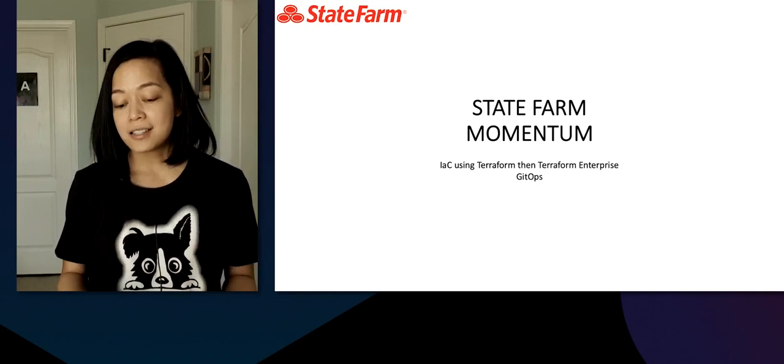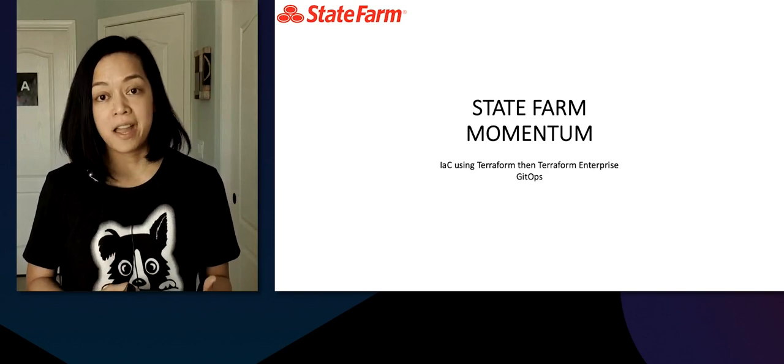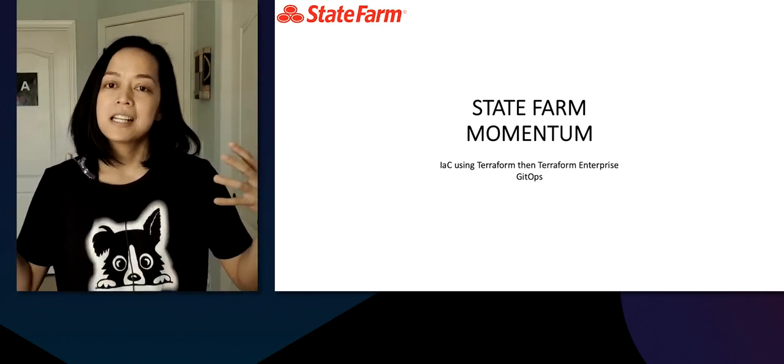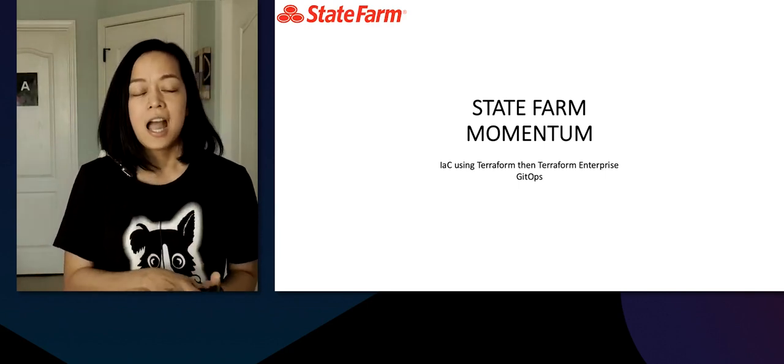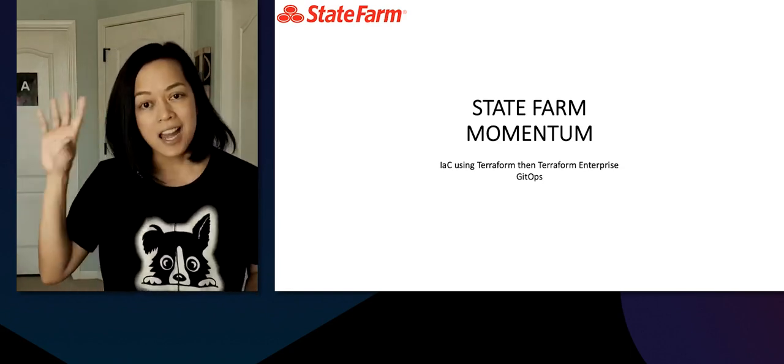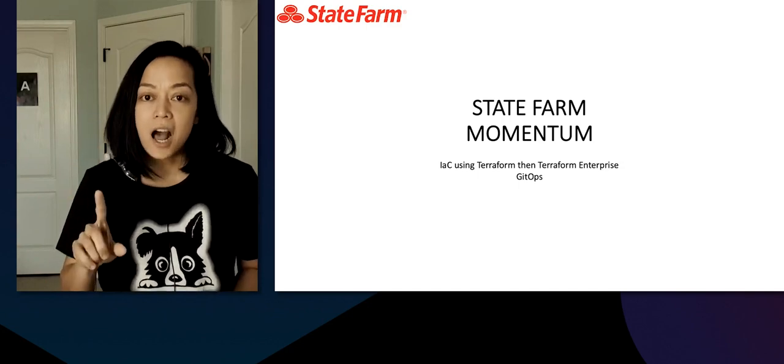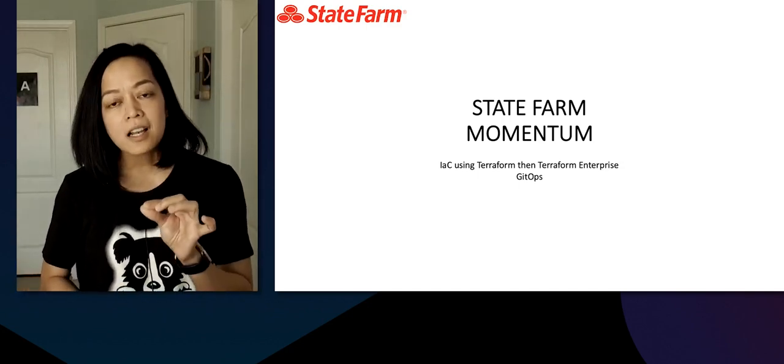Next momentum: GitOps. We've been number one for several years — we're serious about keeping that competitive advantage. One of the ways we're doing that is by significantly reducing lead time for changes: how quickly do we get innovation from idea into the hands of our customers? That's where GitOps comes in. GitOps is a continuous deployment methodology for cloud native applications. It thrives on the fundamental principle that Git is the source of truth for your entire declarative system.